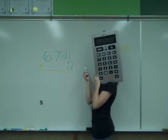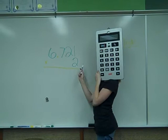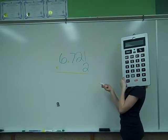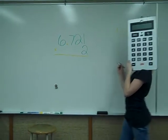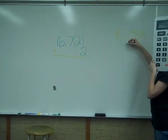So, first of all, you round 6.721 to what, kids? Seven! Seven times two is what? 14! 14 is your estimate!